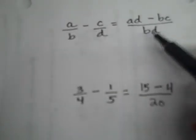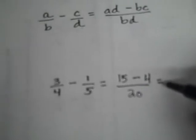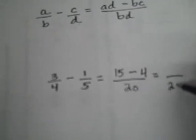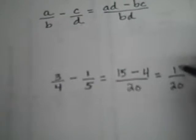That's where I'm getting my b times d from. The denominator will be 20. 15 minus 4 is 11.